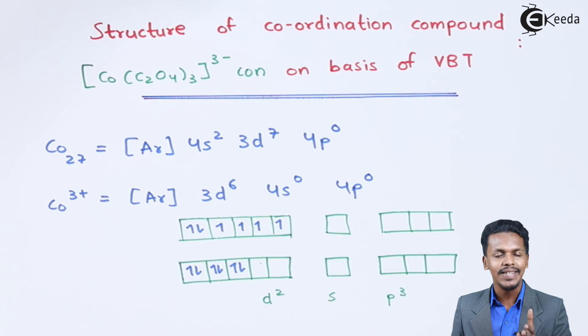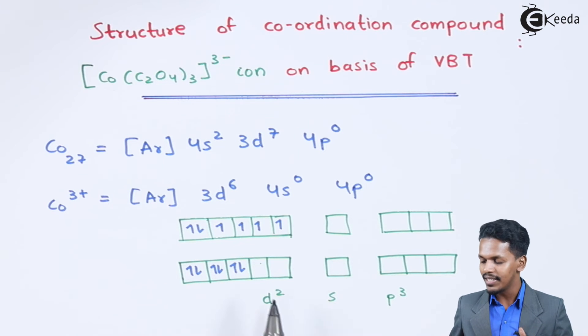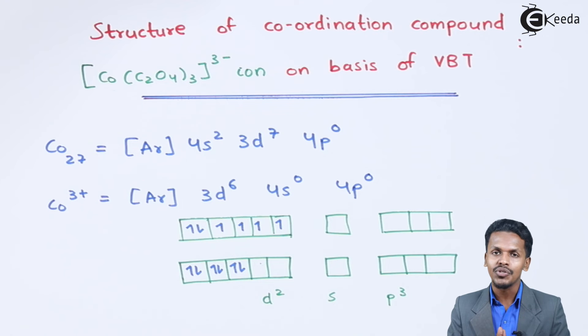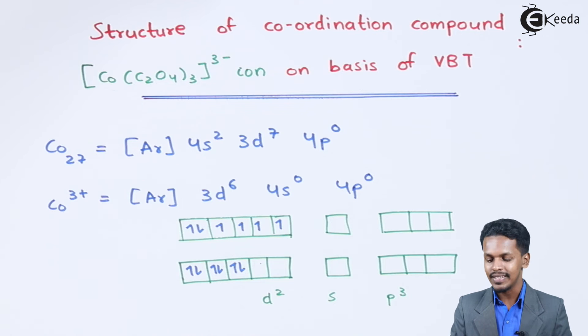Based on the structure, we understand that d2sp3 hybridization gives nothing but an octahedral structure, and that is the structure of this complex.